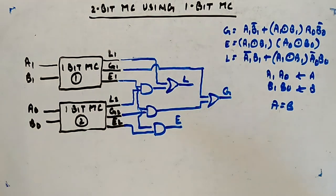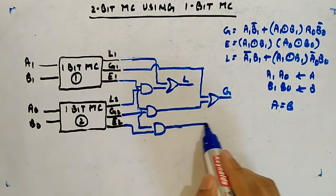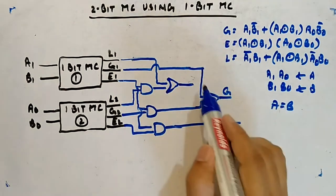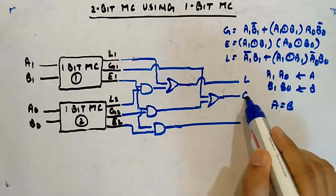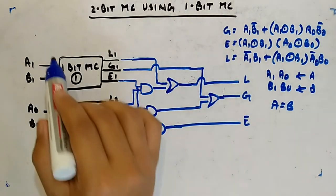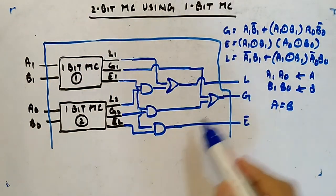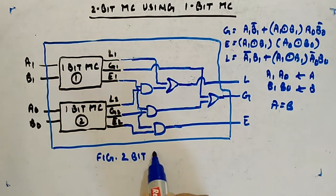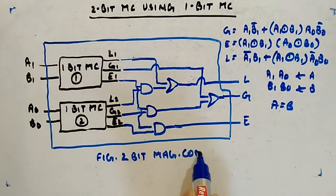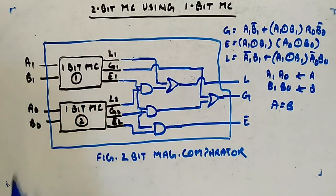So I'll extend these lines to show you clearly. This is your overall L, this is G, and this is E — and this whole circuit is your two-bit magnitude comparator.